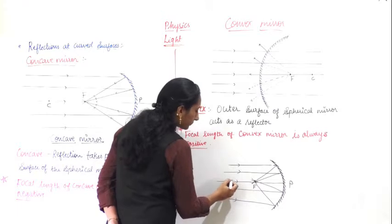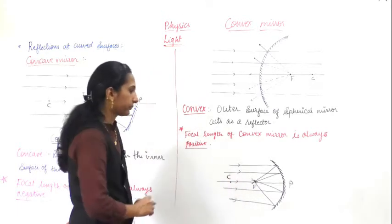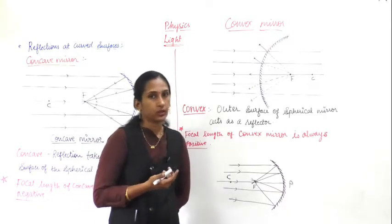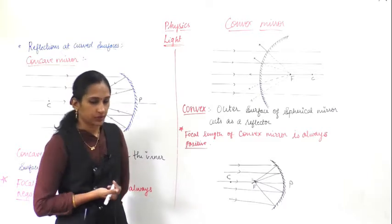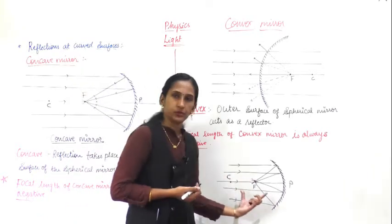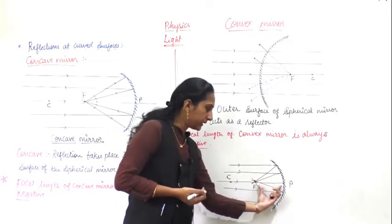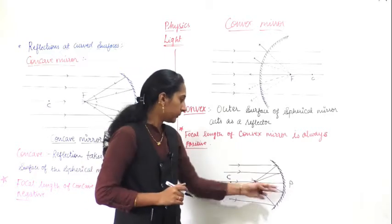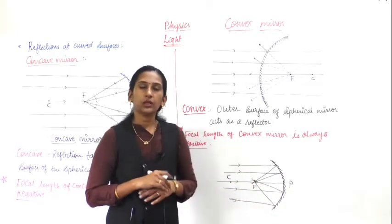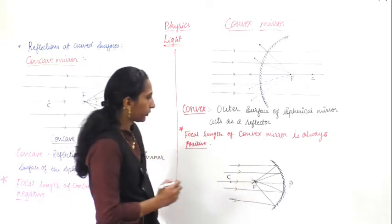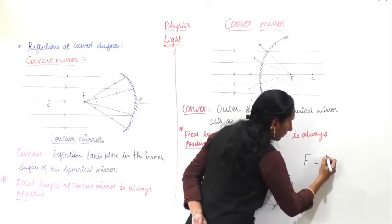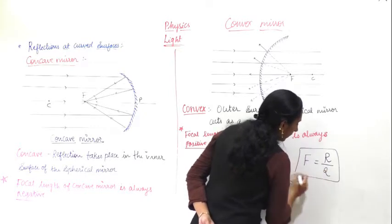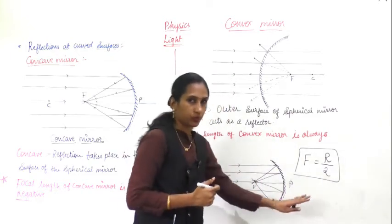Here is the radius of curvature. The focal length is always half the radius of curvature - these are equally placed. That is, focal length f equals radius of curvature R divided by 2. This is a very important formula used for problem solving.